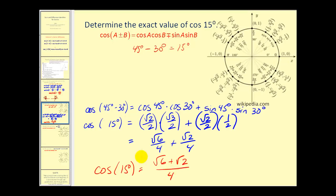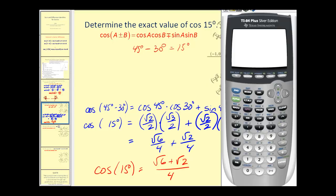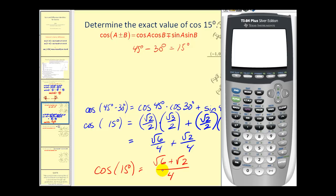We can check this on a graphing calculator in decimal form. First make sure we're in degree mode, press enter, go back to the home screen, and type in cosine fifteen degrees. Then compare this to the exact value we found. This verifies our work.